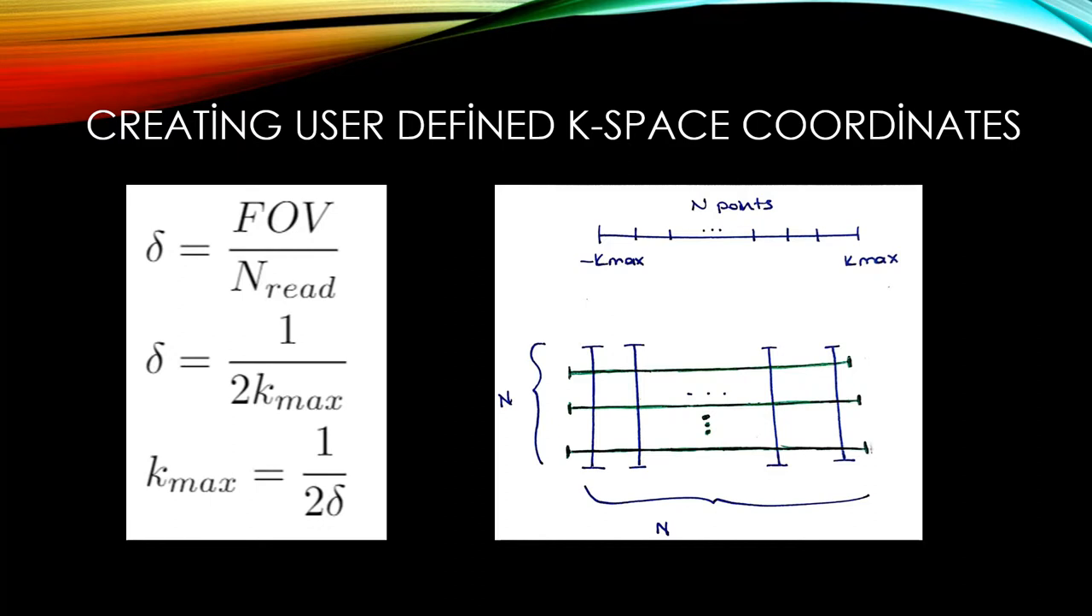For resolution, I use the relation δ = FOV/N_read = 1/(2k_max). I first create a horizontal line in the coordinate system with a range of maximum k values with N number of samples.